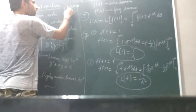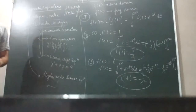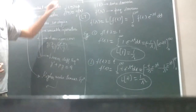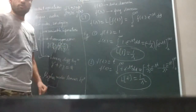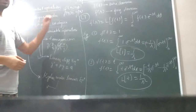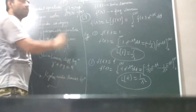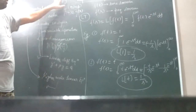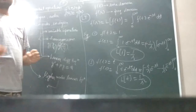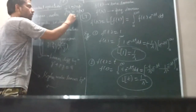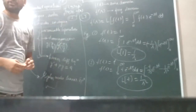If f(D) equals some function of x, then we call it an inhomogeneous equation. We have studied both. First, we studied the homogeneous equation and obtained the complementary function.